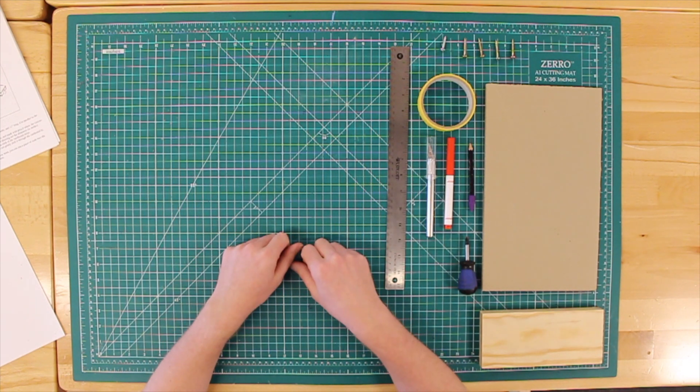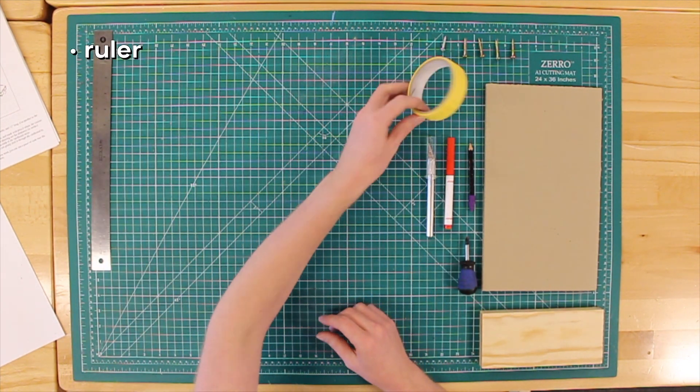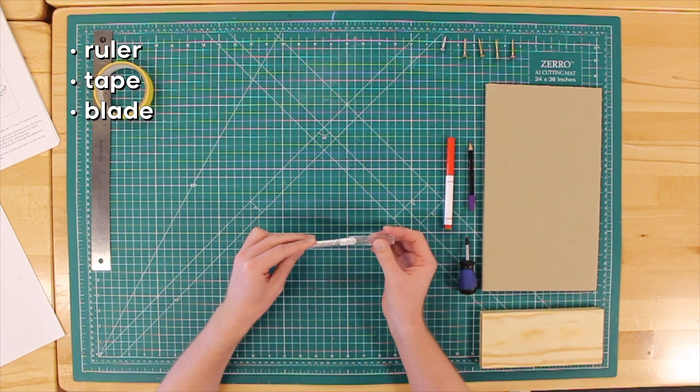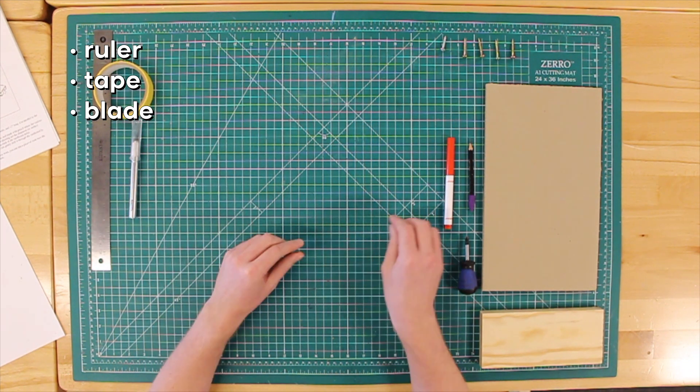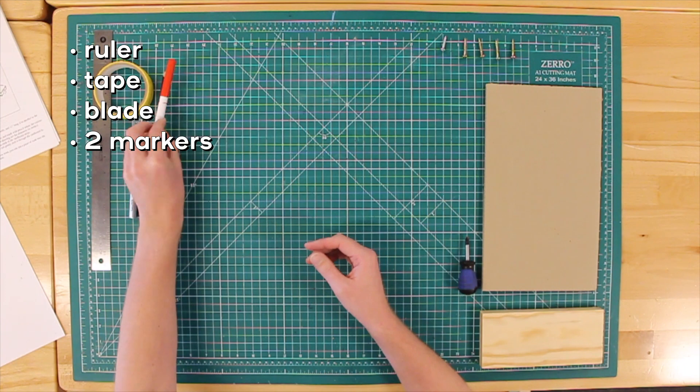The tools you'll need: a ruler, some tape, a blade. I'm using a hobby knife but you can use a box cutter or some scissors. Two markers or pencils, anything that writes without the need of too much pressure.